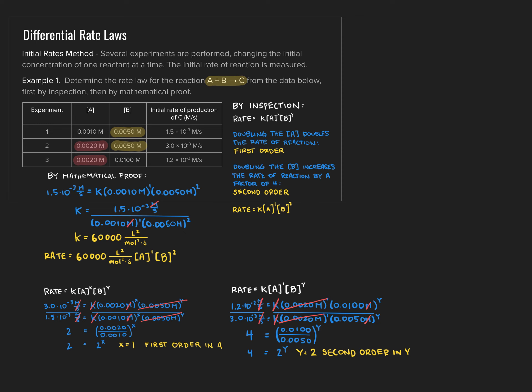At this point, we've now determined our rate law including the value of the rate constant K, both by inspection and by mathematical proof. Most of the time on the AP test you can choose which method to use. If you choose the inspection method, be sure you are ready to justify your choices based upon the changing rates of reaction as a function of the initial concentrations. This concludes our discussion of differential rate laws. We'll see you in the next lecture.